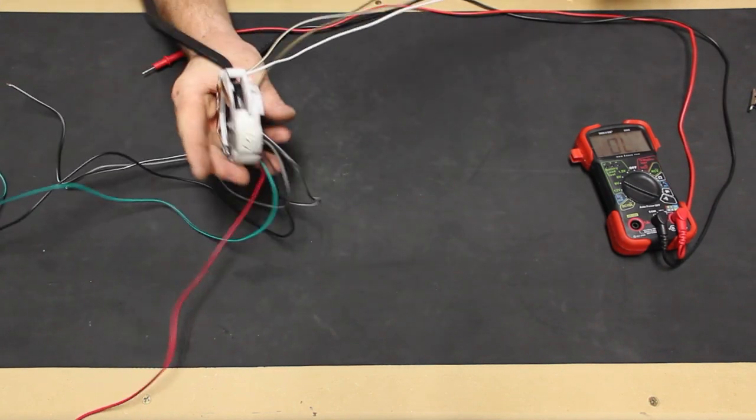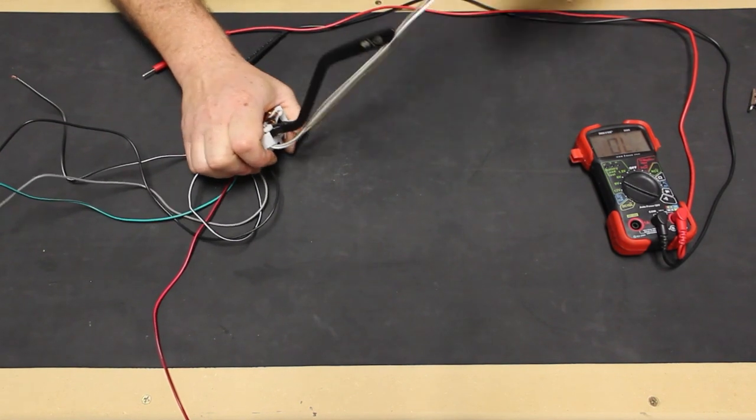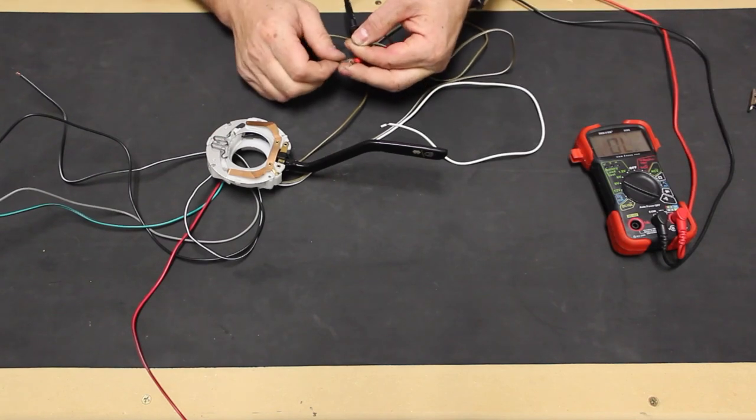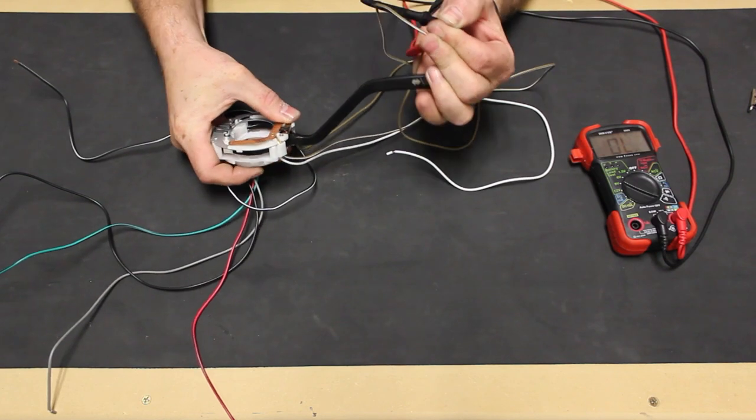While we're testing, we'll double check the momentary ground when we pull back on the lever for the headlight relay by checking the brown and the brown-white wire for continuity. With leads to each wire, there is no connection, but as we pull back on the lever, we have continuity.